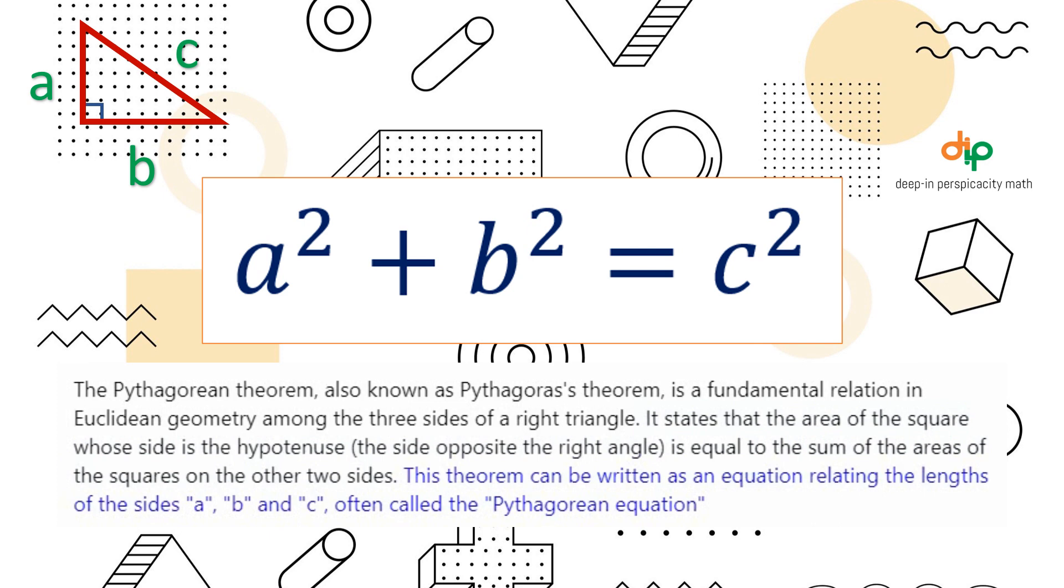This theorem can be written as an equation relating the lengths of the sides a, b, and c, often called the Pythagorean equation.